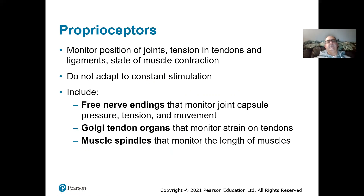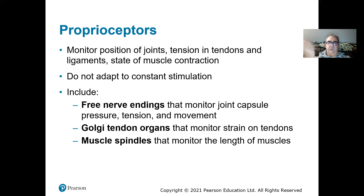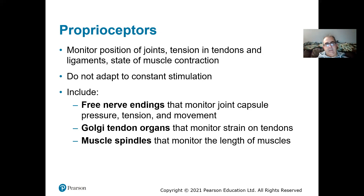Proprioceptors come from the same word as proprioception — understanding where your limbs are in space. They monitor the position of your joints and the tension of tendons. Remember, tendons join muscles to bones. If a muscle is pulling really hard on a bone, that tendon will be very tense. The position of those joints is monitored along with the state of muscle contraction. They are monitoring so you don't hyperextend joints or injure yourself. Proprioceptors do not adapt to constant stimulation — you can't ignore that your arm or leg is being stretched in the wrong direction.